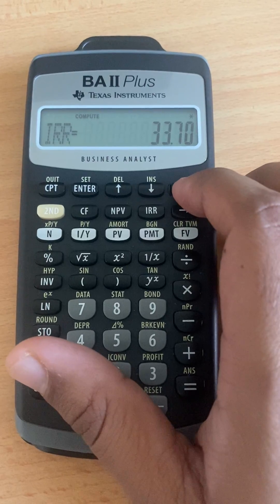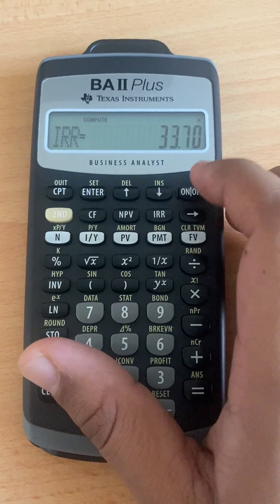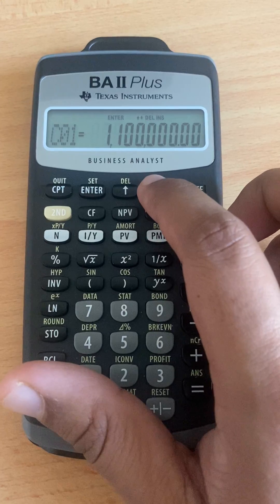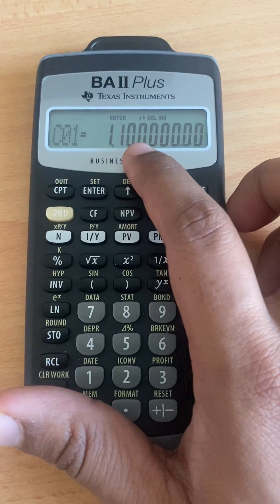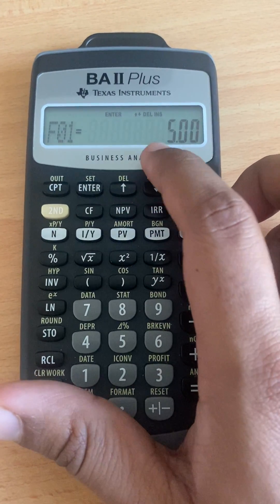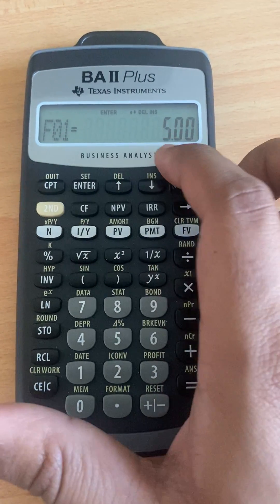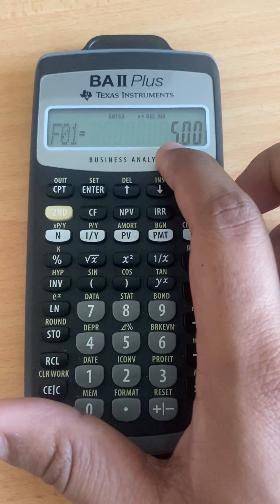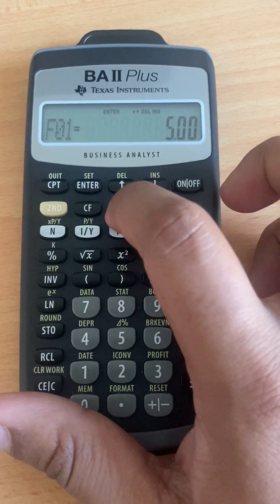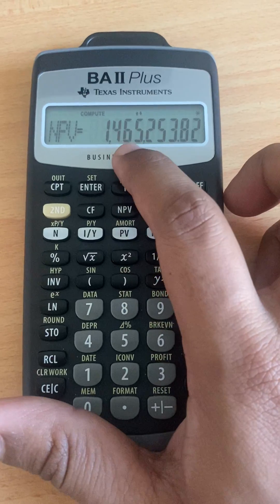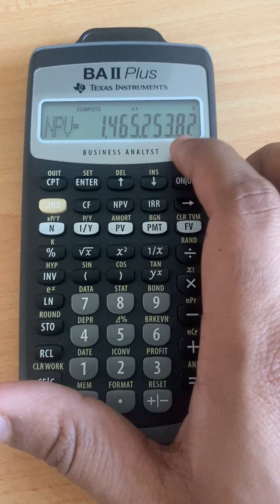I hope that you know how to use the calculator. So this is the shortcut how to use the same amount from year 1 to year 5. You just change the frequency from 1 into 5 times, so you will get the NPV is 456,253.82.